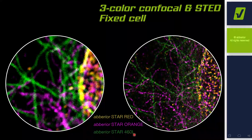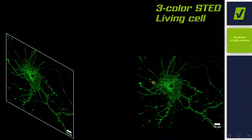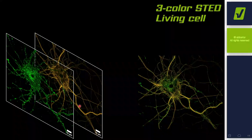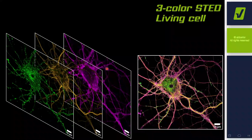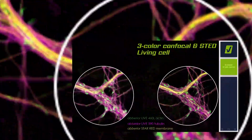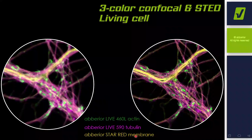We can also use this 460L dye for live-cell applications — this dye can enter a living cell as well, not only suitable for fixed cells but also for living cells. What you can see here is a living neuron. We stained the actin network with the 460L actin probe, the tubulin filaments with a 590 tubulin probe, and in magenta you can see the membrane stained with our recently launched Star Red membrane probe. This STED image shows the improvement in resolution in this living neuron compared to confocal. This combination of blue-absorbing long Stokes shift dye, orange dye, and Star Red membrane infrared dye is a beautiful package for a three-color live-cell application.